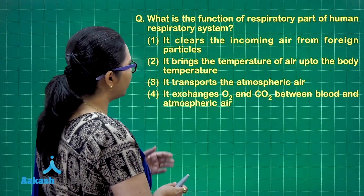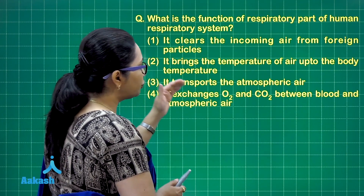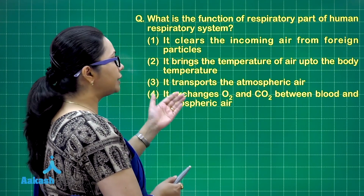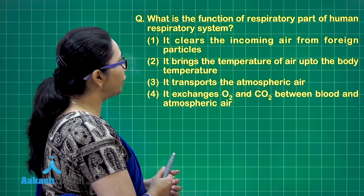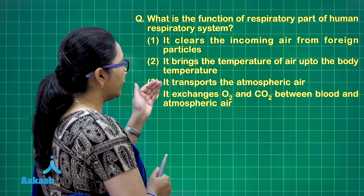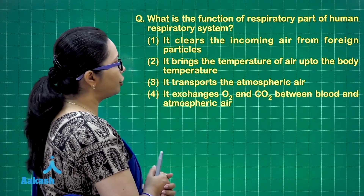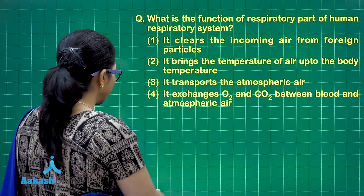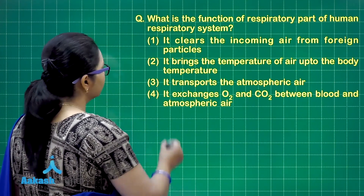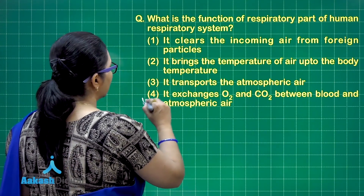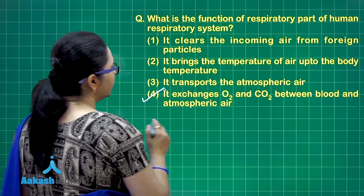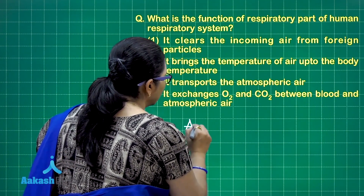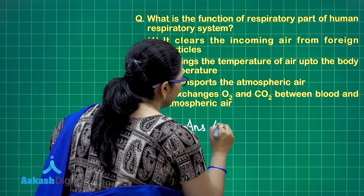Option C — transporting atmospheric air — is the entire bronchial tree. Option D — exchanging O2 and CO2 between blood and atmospheric air — is the correct choice. Our answer is option 4.